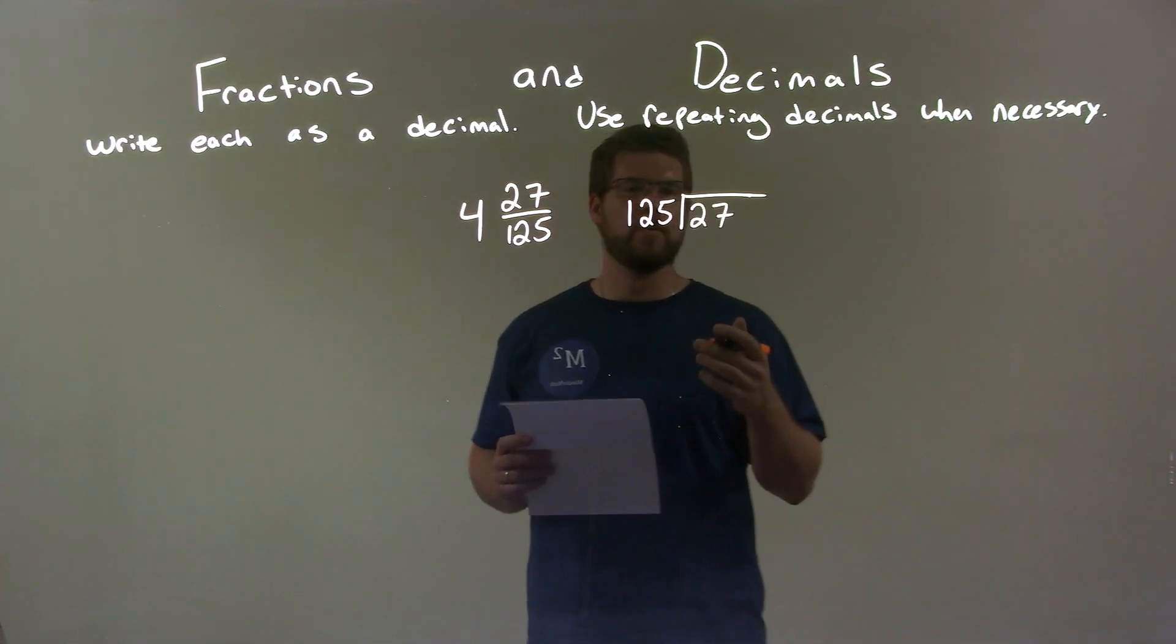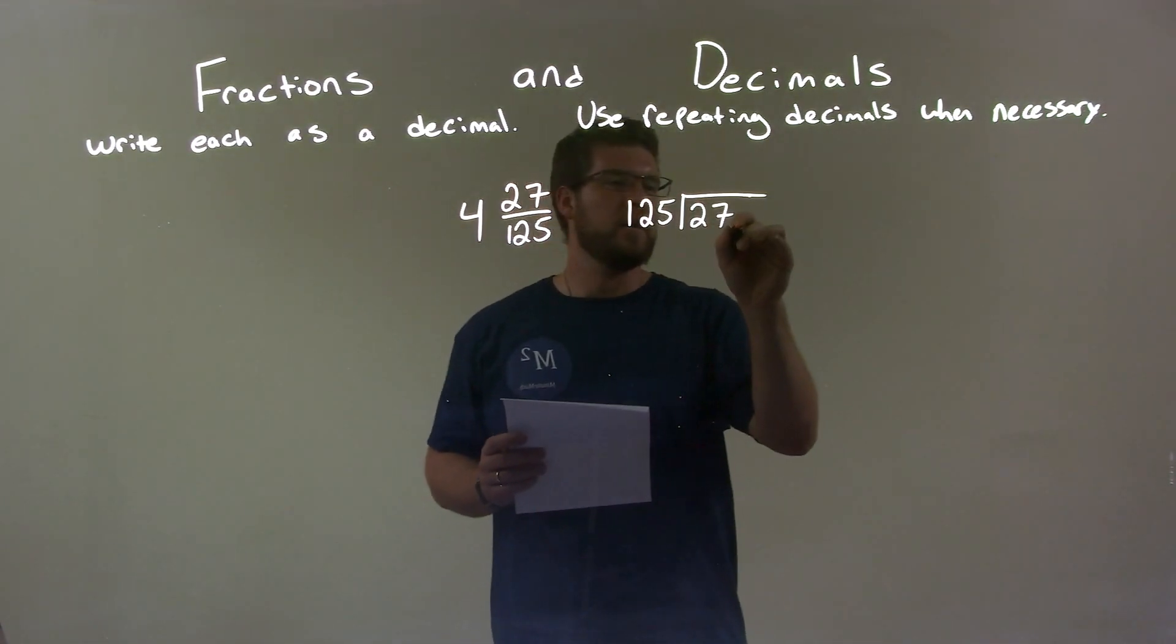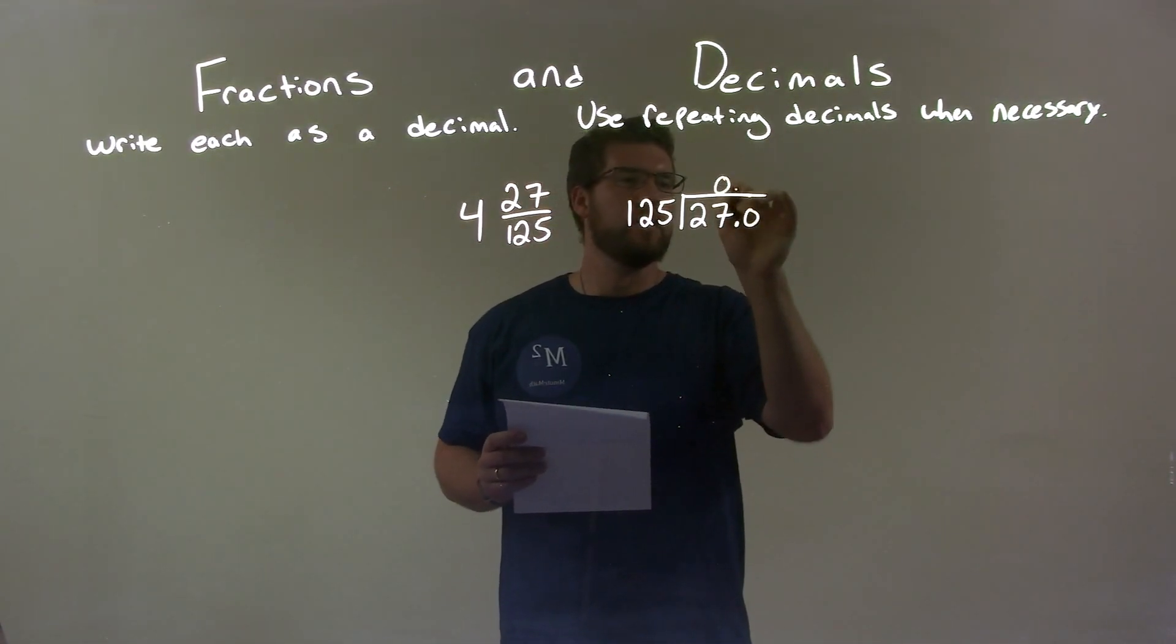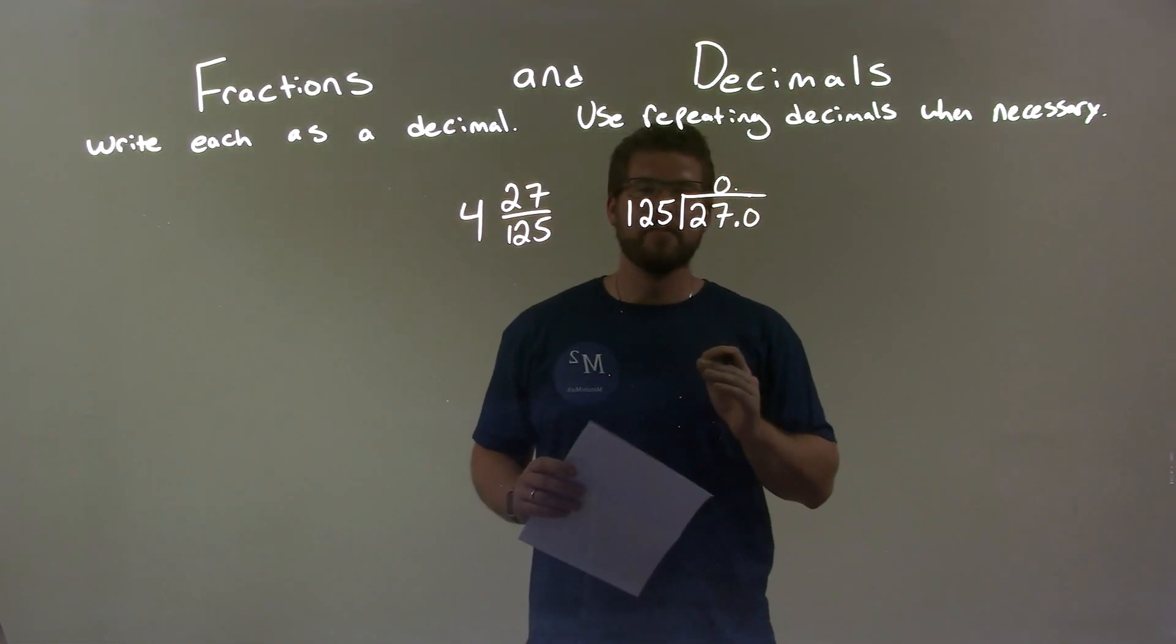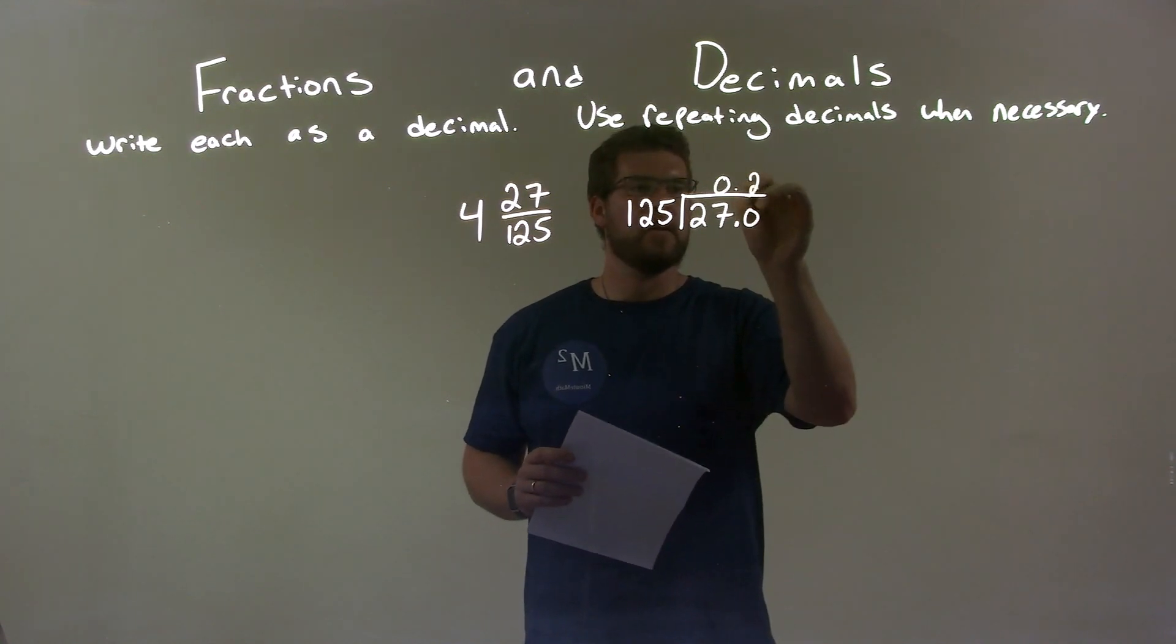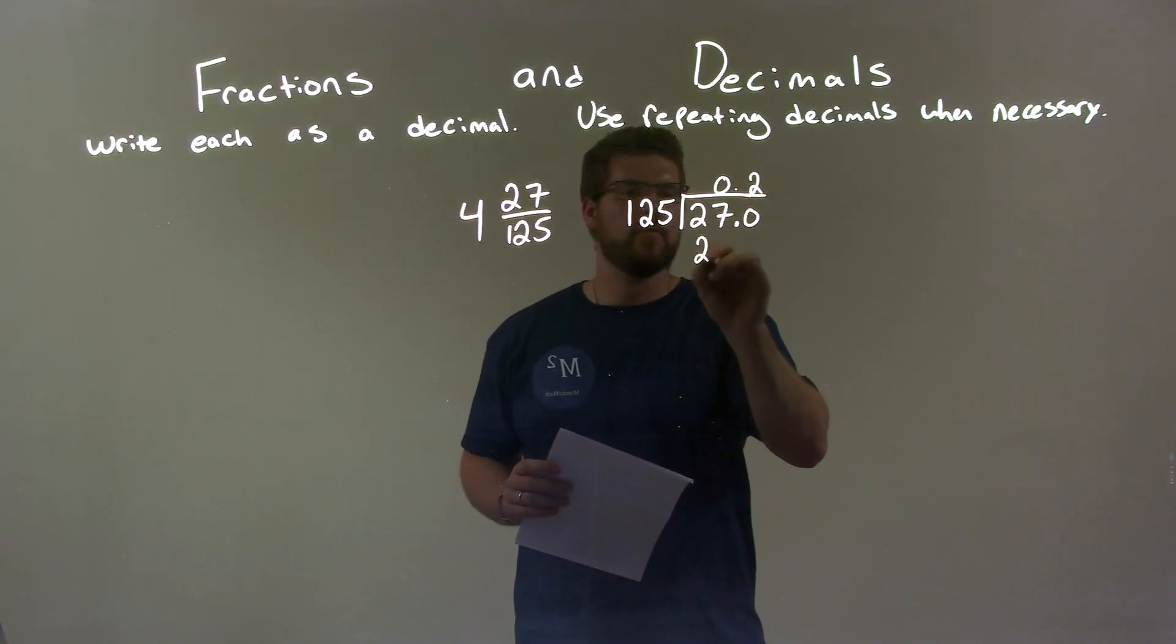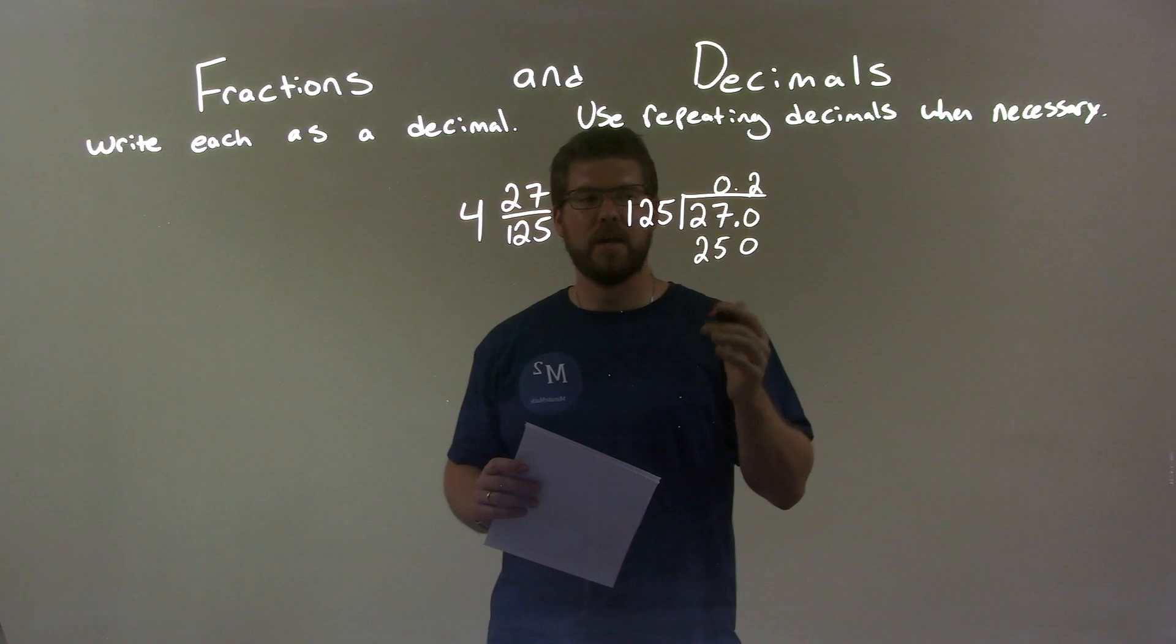125 does not go into 27, so we add another zero there, and now we have 125 into 270. Well, that happens at least twice, because 2 times 125 is 250, so we're getting as close as we can to 270.